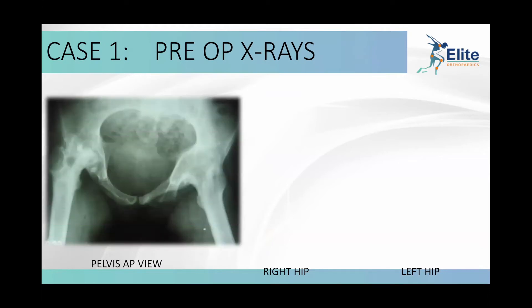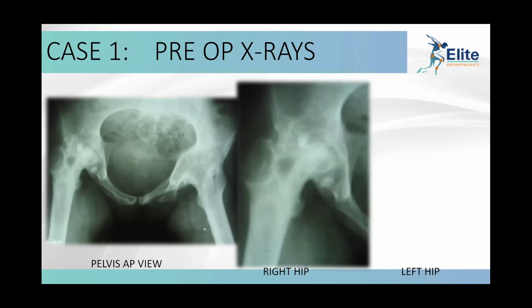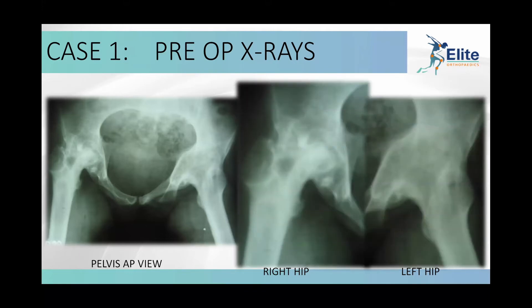On the pre-op X-rays — the pelvis AP view from eight to nine years back — the left hip was grossly fused. The right hip shows some shortening and a high center of rotation. The lateral views of both hips show a total fused mass from the femur to the acetabulum. Today I would want a CT scan with 3D reconstruction, but this was an older case.